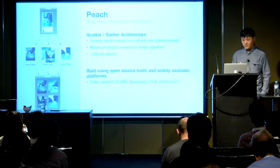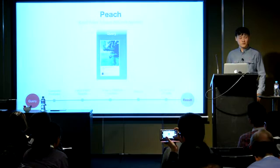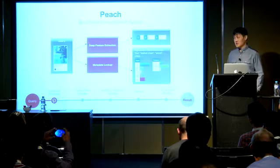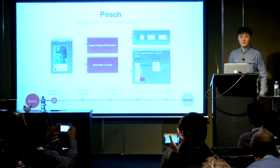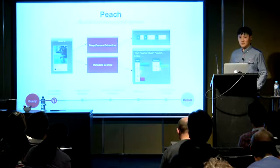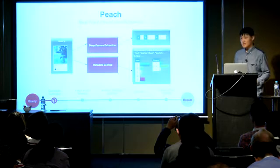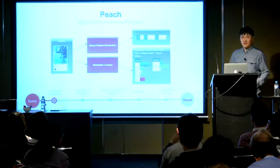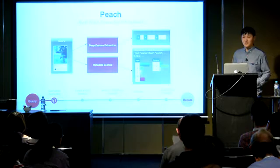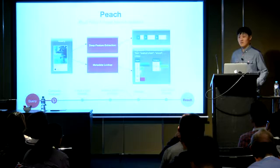Given a query image, we first extract deep learning features — in particular, a binarized version of our deep learning feature, since we need to store these features in our index as well. By binarizing these features, we save around 32x memory compared to the original float vectors. Along with the deep learning features, we also look up various metadata we have about the image — including LDA topic vectors, category vectors, and annotations — to use in our visual search system to improve results.